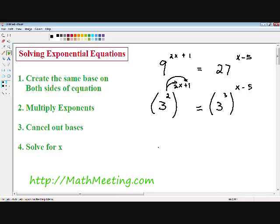Now I'm going to multiply my 3 exponent with the x minus 5. 3 multiplied by x is 3x and 3 multiplied by negative 5 is negative 15.